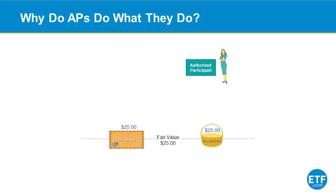So if the authorized participant can do all of those things, it's reasonable to ask why they'd bother. And like most things on Wall Street, it tends to come down to profit motive. Let's imagine the authorized participant is watching this particular ETF like a hawk all day, seeing what the ETF's trading for — $25. And then they're looking at what the basket's worth, the thing they would have to go buy with the shopping list. As long as those things are equal — in this case $25 — the authorized participant's not going to do anything. There's no opportunity for them.